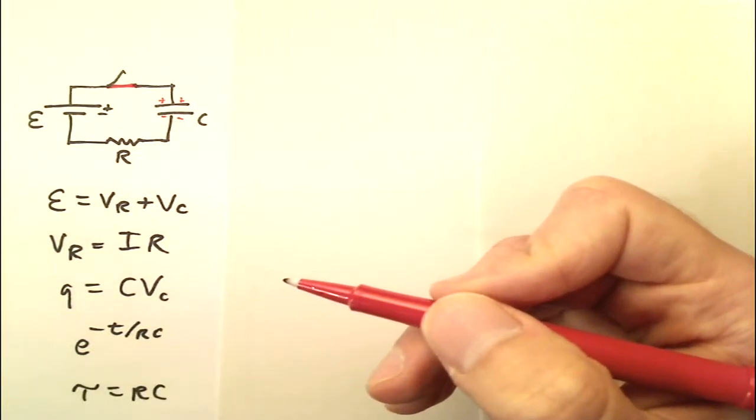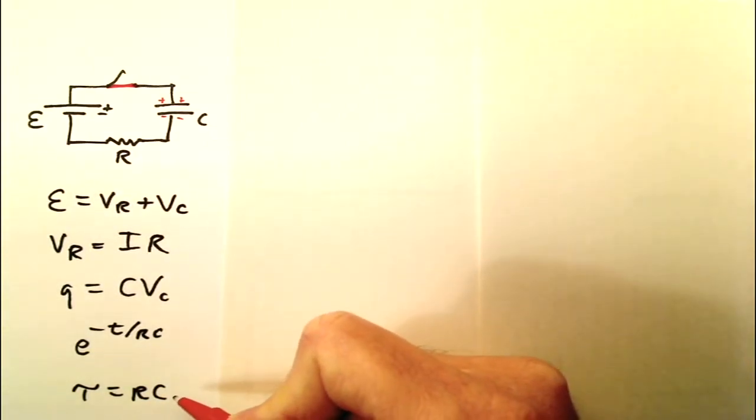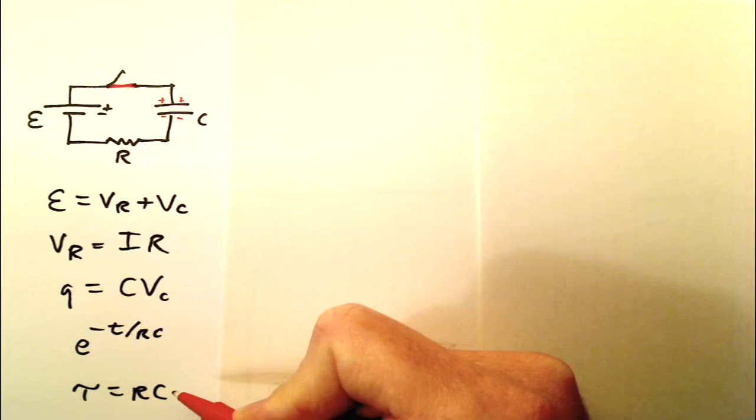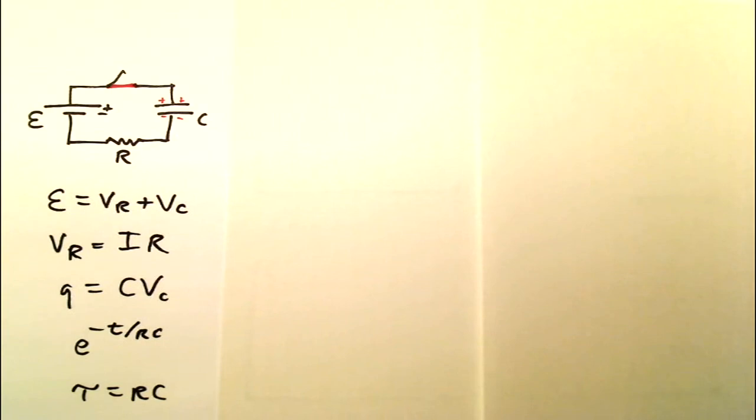Last and least there is this tau, tau equals RC. That's called the time constant. It's really nothing more than an abbreviation for RC. I'm not going to use it, but I thought I would mention it because I know that some of you have seen it.